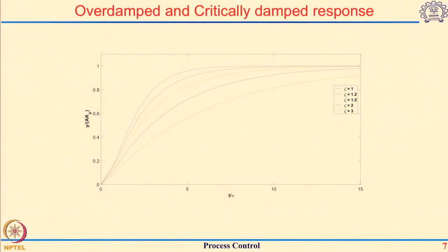Here are the responses when looking at critically damped or overdamped regimes. As the damping coefficient is very large, the response becomes more sluggish or slower compared to a critically damped response. The critically damped response actually represents the fastest way to go from the original point to the final point and stay there. This is how the response changes as the damping coefficient changes.